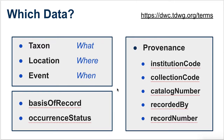We also have Darwin Core fields — or terms, properties — that are of interest in our search for usable data. These include the basis of record, which tells us whether it's an observation or a museum specimen. Occurrence status tells us whether it's a presence or absence record. Other fields of interest help us find more information if it's not available digitally: what institution it's housed in, what collection, the catalog number, and the recorded-by and record number fields, in case things aren't cataloged any other way.